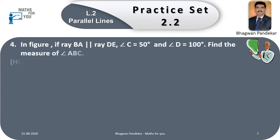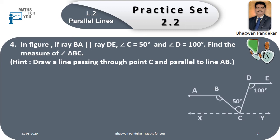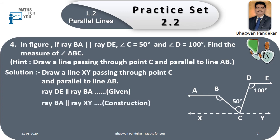Example number four: In the figure, if ray BE is parallel to ray D and angle C = 50°, and angle D = 100°, find the measure of angle ABC. Hint: Draw a line passing through point C and parallel to line AB. Solution: Draw line XY passing through point C and parallel to line AB. Ray D is parallel to ray BA — given. Ray BA is parallel to ray XY — by construction. Therefore, ray D is parallel to ray BA, which is parallel to line XY. This is equation one.